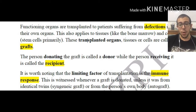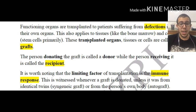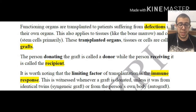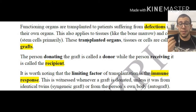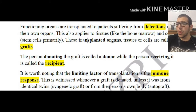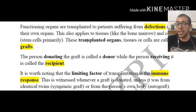It is worth noting the limiting factors. Why can't we just get better organs? If someone has defective lungs, a kidney, or whatever, why not get a functioning replacement from a deceased person? It is because of the immune response — there is a very strong immune response if certain things are not taken into consideration. This is witnessed whenever a graft is donated, unless it was from identical twins or from the person's own body, which is called an autograft. That phenomenon is called the syngeneic graft.